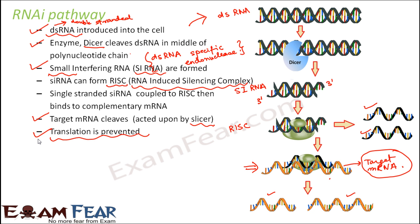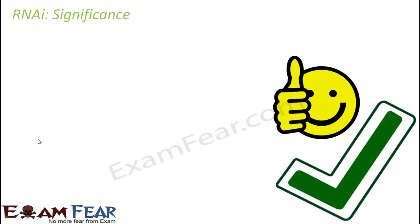A similar technique can be used to control nematode infestation in certain plants. By controlling the production of proteins responsible for the infestation — through controlling the process of translation — the RNA interference pathway can control gene expression. This technique can help control several infestations caused in plants.